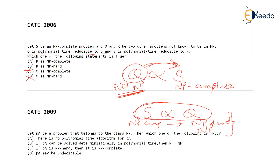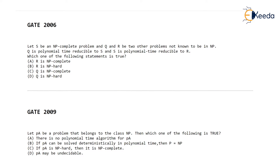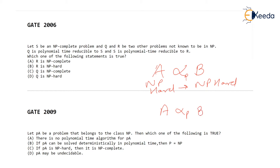Before closing this question, let's check the reducibility rules again. Rule 1: If A is reducible to B in polynomial time and A is NP hard, then B is surely NP hard. Rule 2: If A is reducible to B in polynomial time and B is a polynomial time (P class) problem, then A is definitely P class. From these two rules, we conclude R is NP hard. Let's move to the next question — GATE 2009.